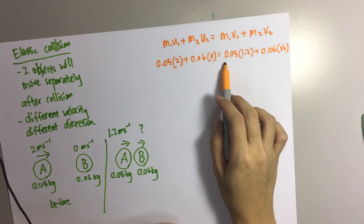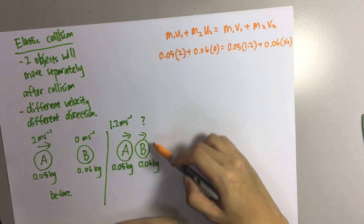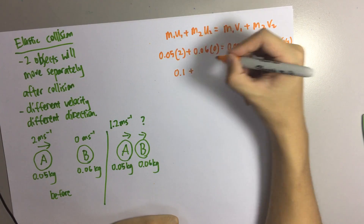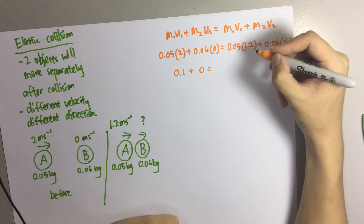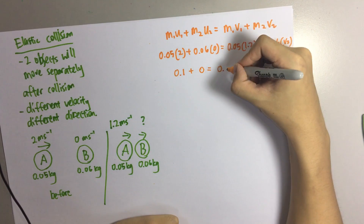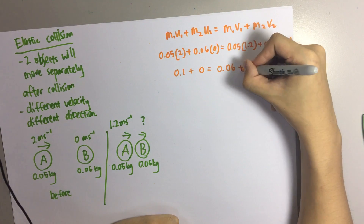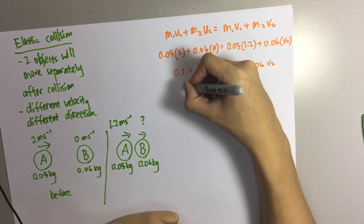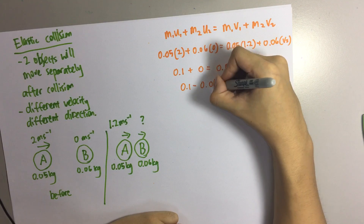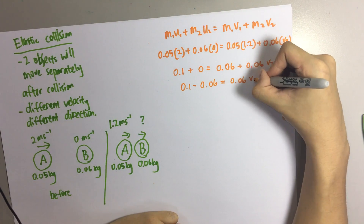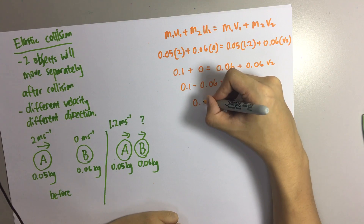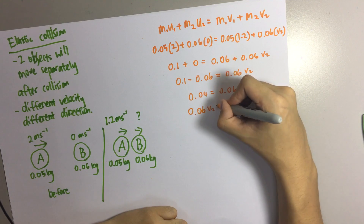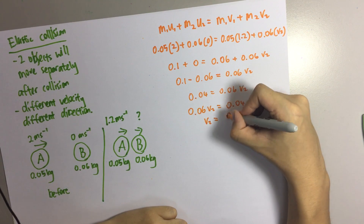This is before collision and this is after collision. All the information comes from the question, so we just multiply. It becomes: 0.1 + 0 = 0.06 + 0.06·V2. We now need to solve it: 0.1 − 0.06 = 0.06·V2.